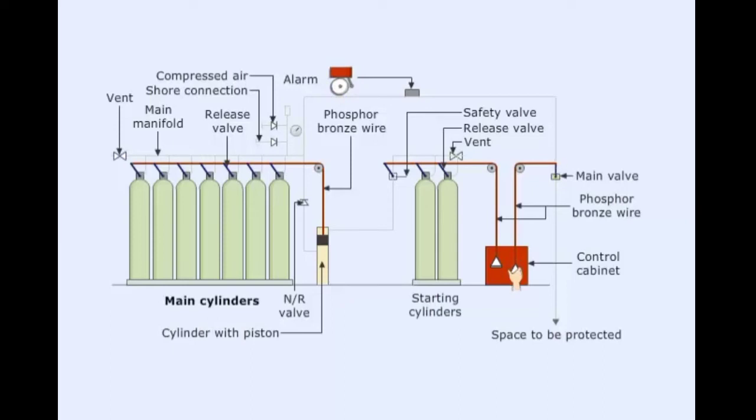Pull the wire connected to the main valve. This opens the valve that connects the main manifold to the machinery spaces.